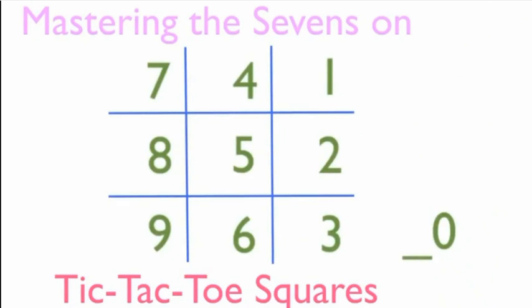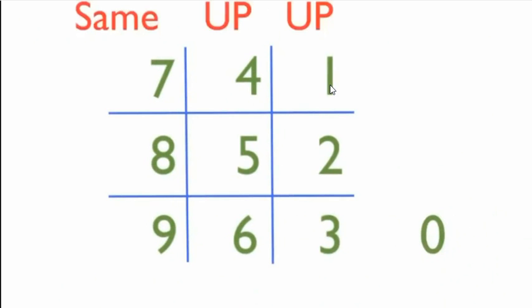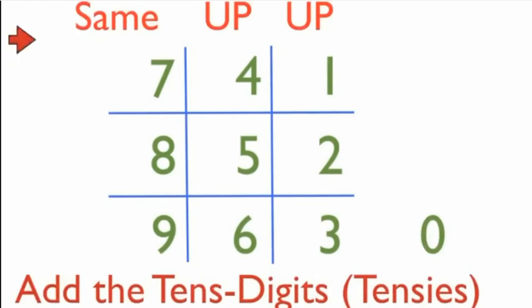So I am arranging in this order: 1, 2, 3, 1, 2, 3, 4, 5, 6, 7, 8, 9 and I am taking the 0 separately. Now I am going to add the 10th digit. The formula is same up up. What is that same up up? Let us see.